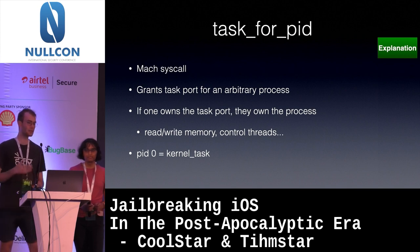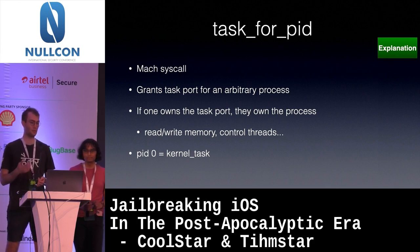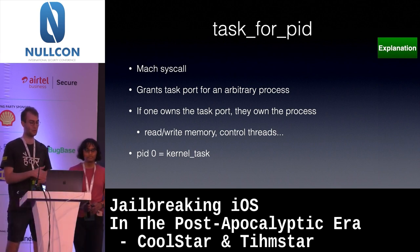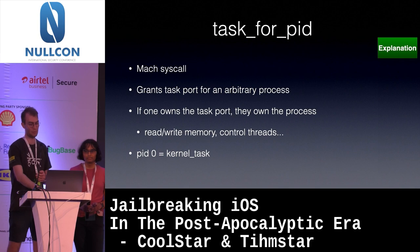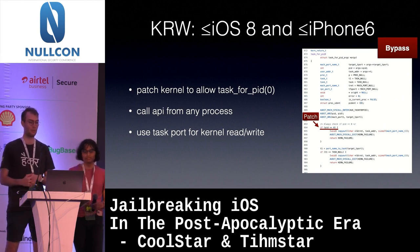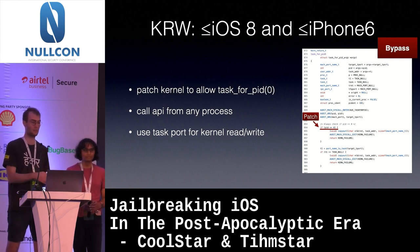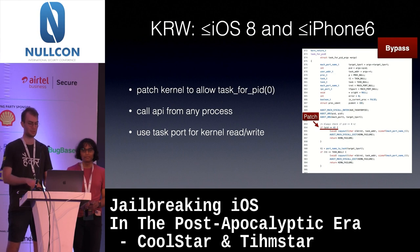The XNU kernel has this Mach syscall — Mach is its own subsystem — and it has this syscall task_for_pid, which gives you a port to an arbitrary process. If you own that task port, you essentially own the process, because there are APIs available for reading memory, writing memory, and controlling threads. PID zero on the system is the kernel itself, and if you get a task port to the kernel, you can use these APIs to read and write kernel memory. Prior to iOS 8 or iPhone 6, you would patch the kernel — there's a check saying if you call task_for_pid(0) don't allow it — so you just patch the check, call the API, get a port to the kernel, and use APIs to read and write kernel memory from userspace.